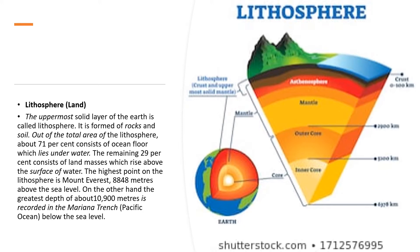It is formed of rocks and soil. The first layer of the Earth is made up of soil and rocks. Out of the total area of the lithosphere, about 71% consists of ocean floor which lies underwater. So whatever lithosphere we have on the Earth, 71% of the lithosphere is under the ocean.